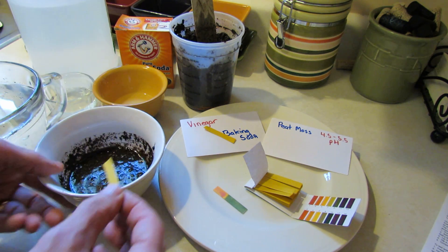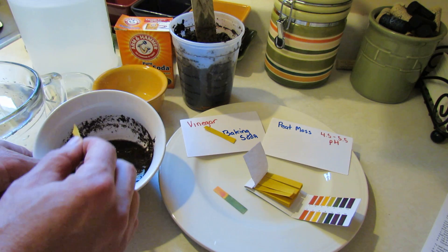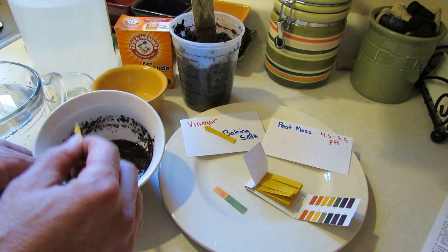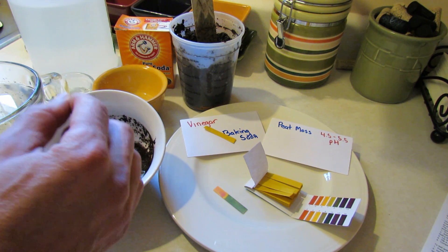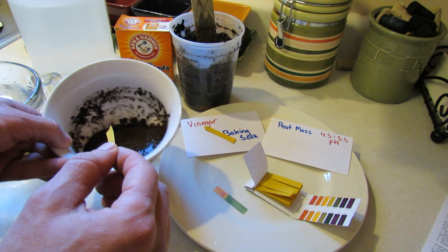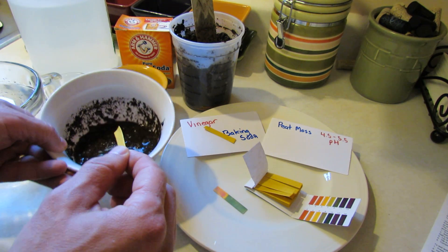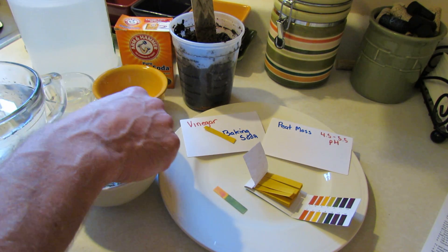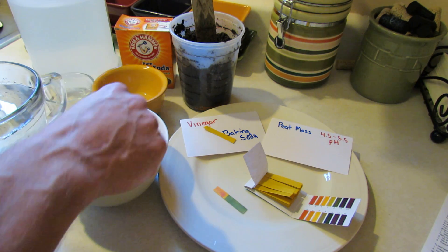So to test it you put in one to two tablespoons of the soil, enough rain water or distilled water to make the test sample look like a milkshake and you put in the test strip for about 20 or 30 seconds.